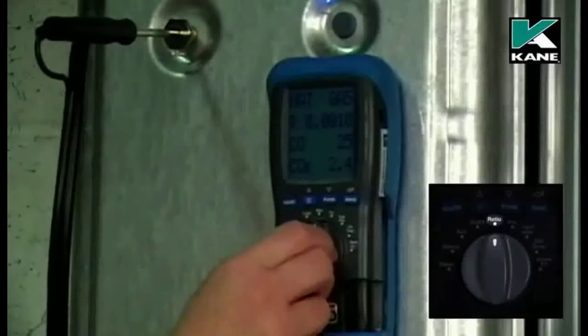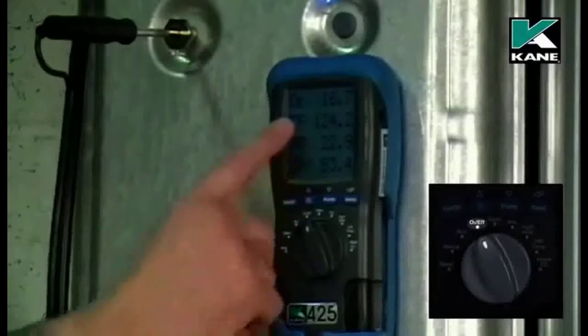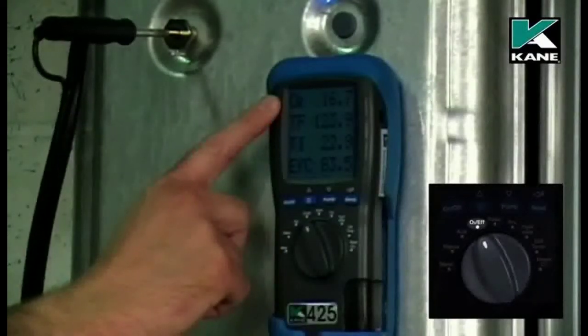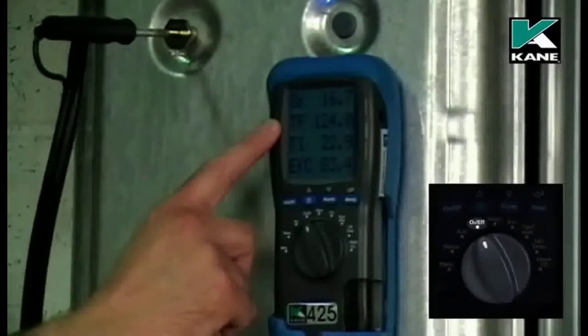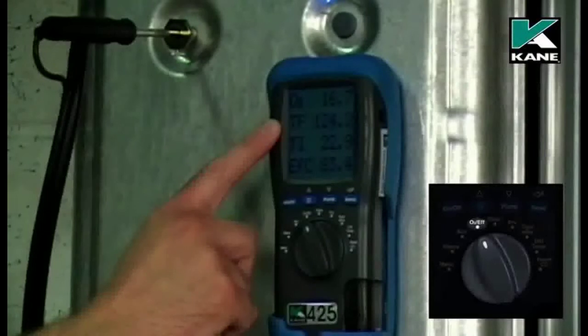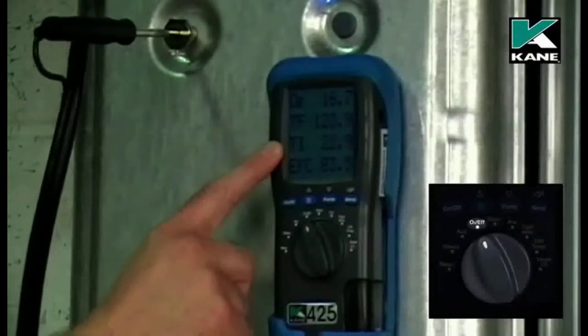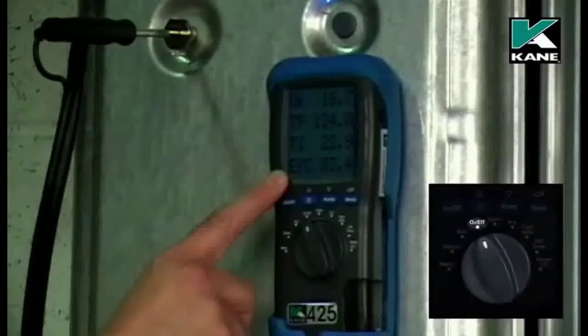If you move the dial to the oxygen and efficiency position, it gives you the oxygen percentage. TF is the flue temperature reading in degrees C, TI is the inlet temperature and EFC is the combustion efficiency reading.